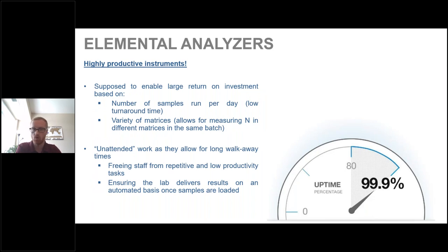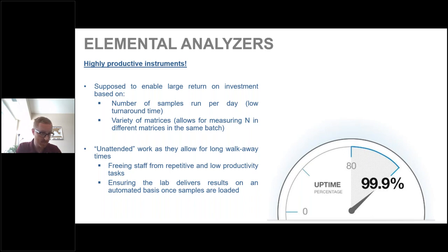Our elemental analyzers are highly productive instruments, offering labs with large sample volumes a large return on investment. Analysis time is three to five minutes per sample, enabling high throughput. There's also a variety of matrices, so unlike a traditional Kjeldahl application, you can run many different types of samples. The NDA series autosampler allows you to analyze up to 117 samples at once, freeing staff from repetitive tasks and delivering results on an automated basis.